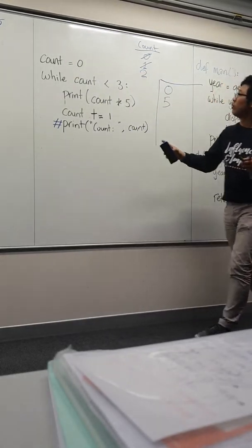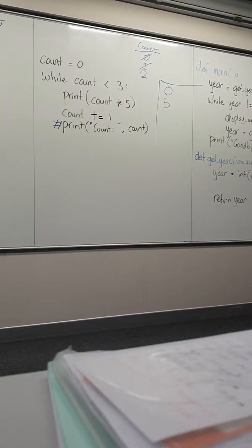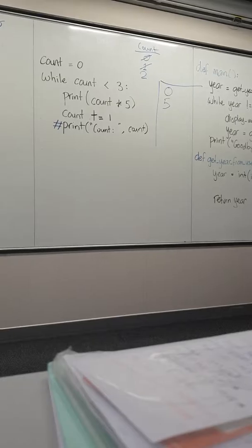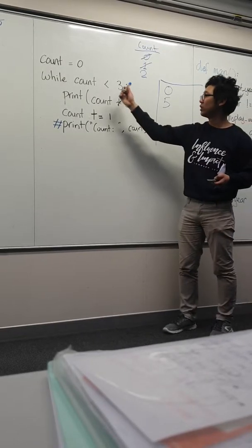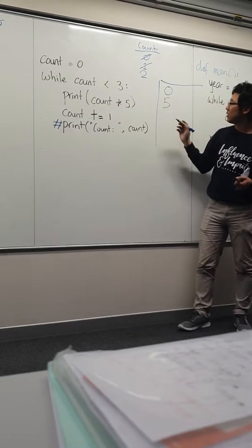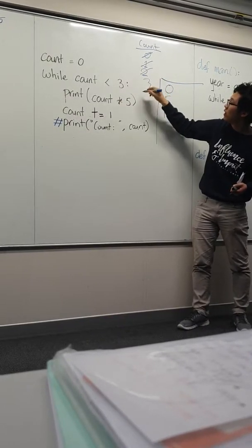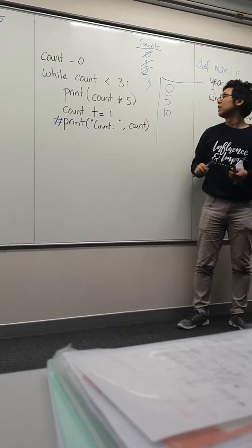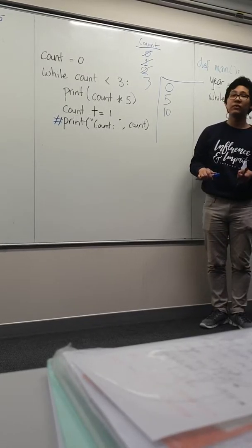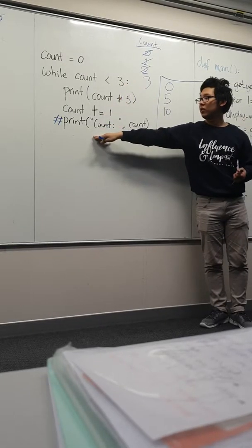But otherwise, if we continue, count less than three, yeah two is less than three, go into the loop again, print count times five, that's ten, count plus equals one, three, count less than three, that's false, finish the loop, it goes to the end.